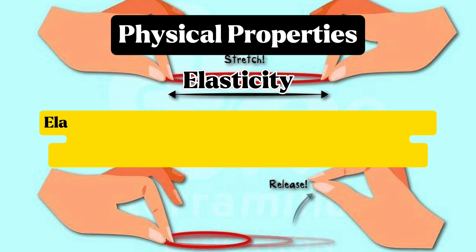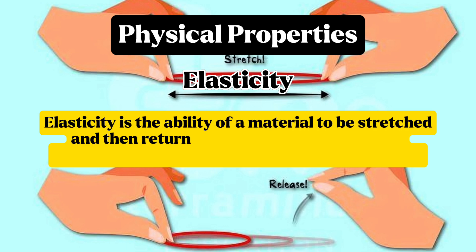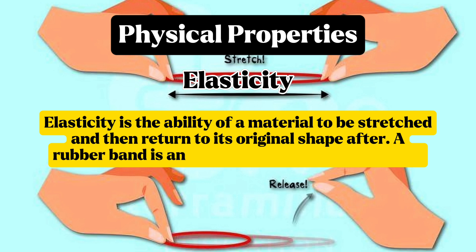Elasticity is the ability of a material to be stretched and then returned to its original shape. A rubber band is an example of an elastic material.